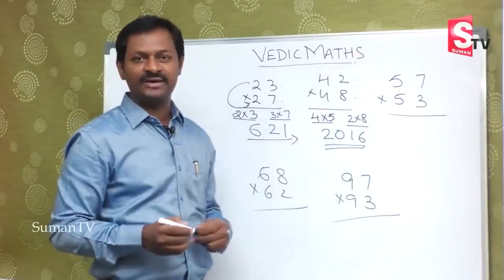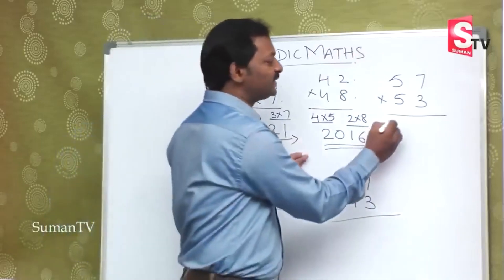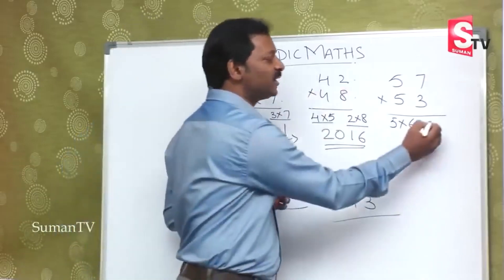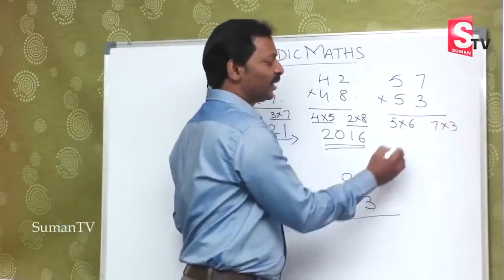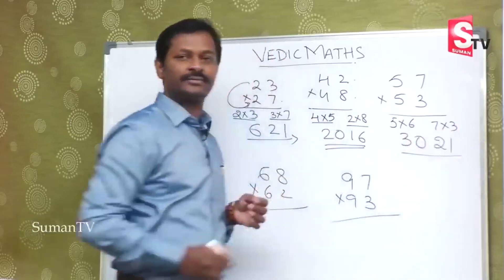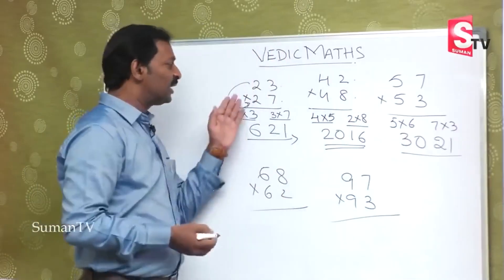5 and 5 is the common number given, so 5 into 6 multiply, and next units 7 into 3. 5 times 6 is 30, and 7 times 3 is 21. So the answer is 3021.